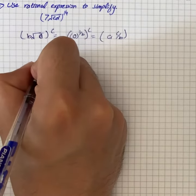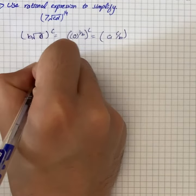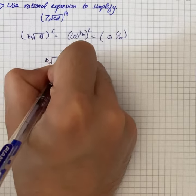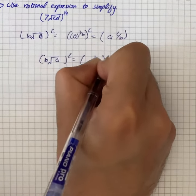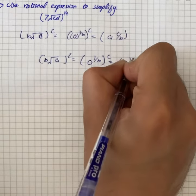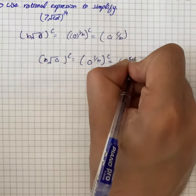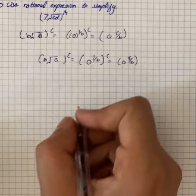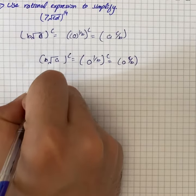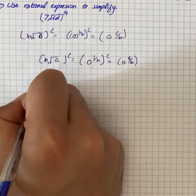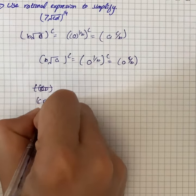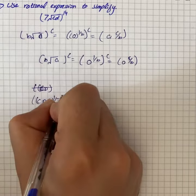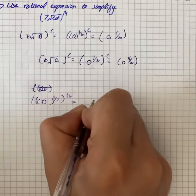So by using this property we have b under root a whole raised to power c is equal to a raised to power 1 by b whole raised to power c, equals to a raised to power c over b. So we have cd raised to power 1 by 7 whole power 14, that is equal to cd raised to power 14 over 7.